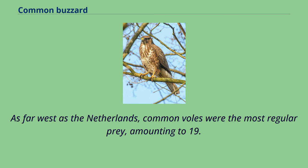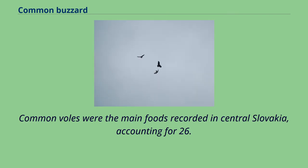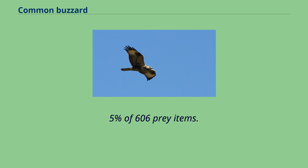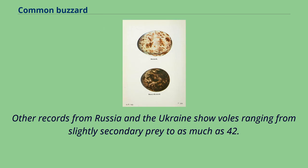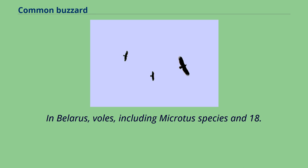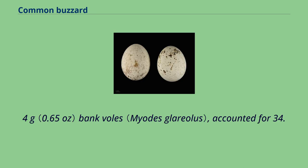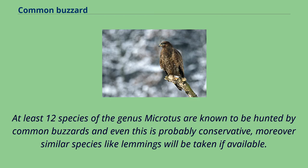Common voles were the main foods recorded in central Slovakia, accounting for 26.5% of 606 prey items. The common vole, or other related vole species, was the main food in the Ukraine ranging east to Russia in the Privolzhsky Steppe Nature Reserve and in Samara. Other records from Russia and the Ukraine show voles ranging from slightly secondary prey to as much as 42.2% of the diet. In Belarus, voles including Microtus species and 18.4-gram bank voles accounted for 34.8% of the biomass on average in 1,065 prey items over 4 years. At least 12 species of the genus Microtus are known to be hunted by common buzzards, and similar species like lemmings will be taken if available.